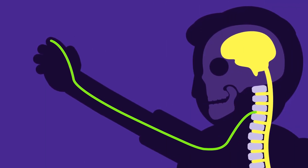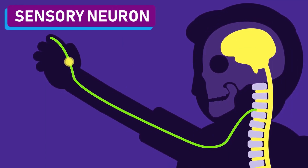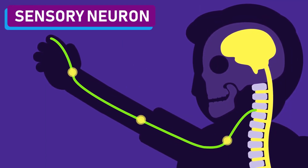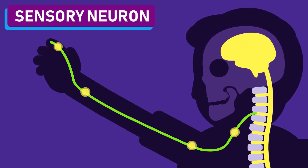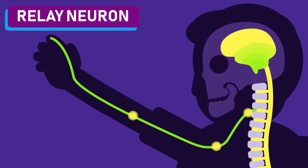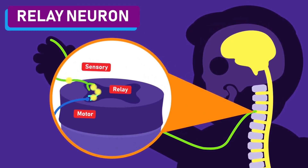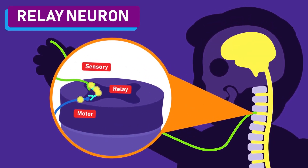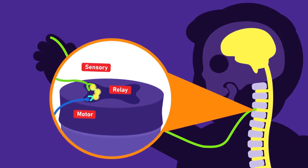2. Sensory Neuron: it carries the stimulus in the form of an impulse towards the spinal cord. It may also involve the brain. 3. Intermediate Neuron, also called Relay Neuron: carries the impulse within the central nervous system.